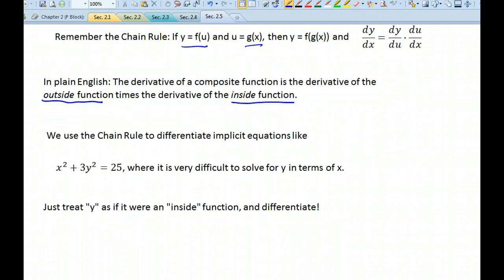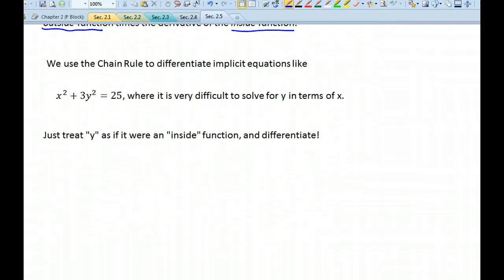So we can use the chain rule to differentiate implicit equations like x squared plus 3y squared equals 25, where it's difficult to solve for y in terms of x. Now this one's not too tough, but we'll do one that is harder in just a minute.